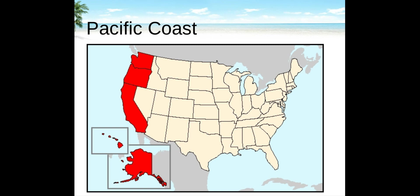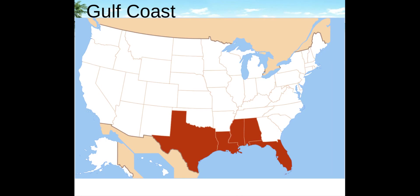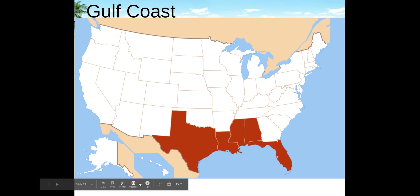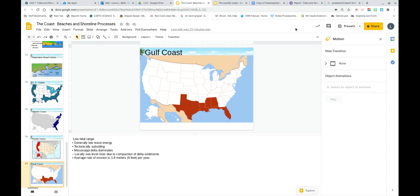The Pacific coast is tectonically rising and experiences less erosion than the Atlantic or Gulf coast, with open exposure to high energy waves. The average erosion rate is about 0.005 meters (0.016 feet) per year. The Gulf coast has a low tidal range, generally low wave activity, and is tectonically subsiding. The Mississippi delta dominates, and local sea level rises due to compaction of delta sediments. The average erosion rate on the Gulf coast is 1.8 meters (6 feet) per year.